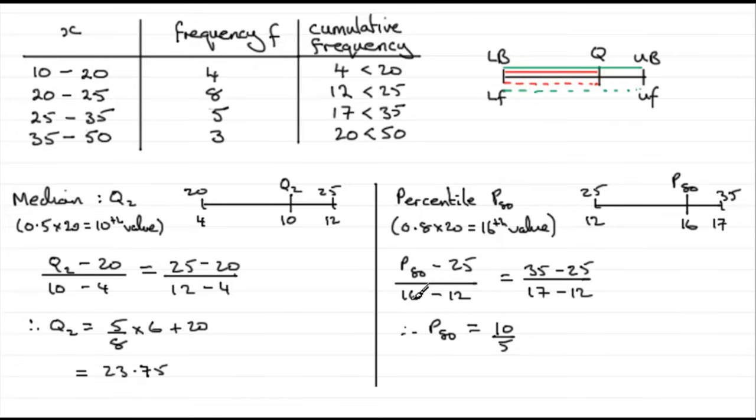16 take away 12 is 4, so times both sides by 4, and then finally add the 25.